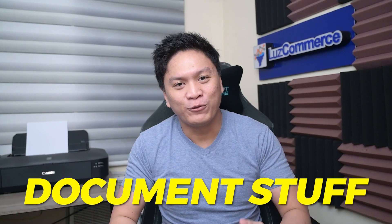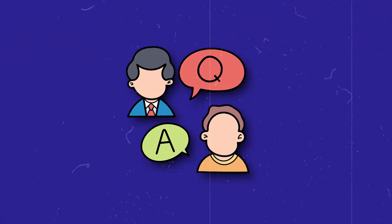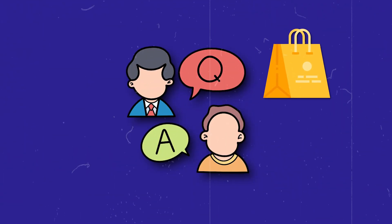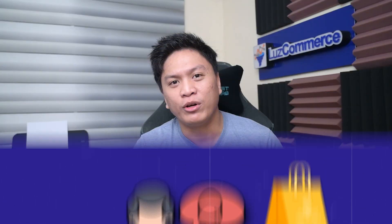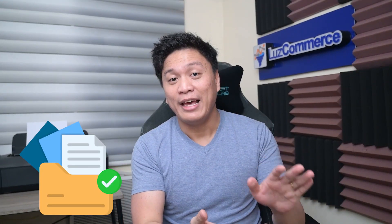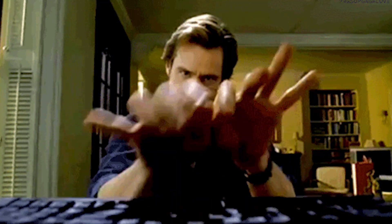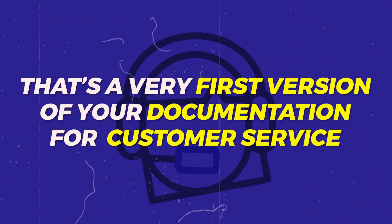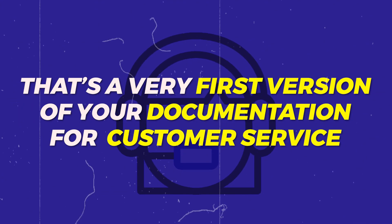Number one thing you need to do is to set up systems, or in short, just document stuff. For example, if someone asks how much the product is, you should have prepared a script for it. If you've been running ads for a while, you have a few common questions that you get in your store — compile all of that, put them in a document, and write up some answers that someone else can copy, paste, and modify based on the needs of a specific customer. That's a very first version of your documentation for customer service.